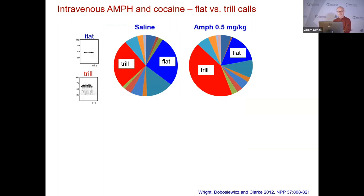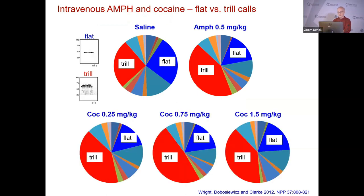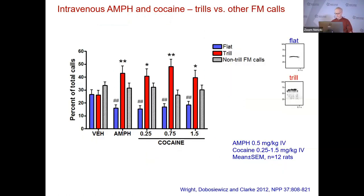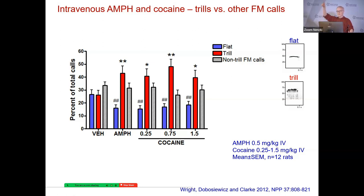We looked at the effects of intravenous amphetamine — previously it was IP — and also intravenous cocaine, and got the same shift: increased trills, reduced flats, always in terms of percent prevalence. When we separated flats and trills from all the other non-trill FM calls, we found that these drugs preferentially affect trills and flats and don't really touch all the other FM calls. That suggests that what we call a trill call — the sinusoidal call in a spectrogram — may have particular relevance to affect. That is what we hypothesized.